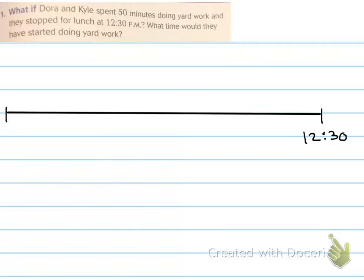So let's try another one. Dora again. Oh my goodness. Okay. What if Dora and Kyle spent 50 minutes doing yard work and they stopped for lunch at 12:30 PM? Whoa. Slackers. What are they doing? What time would they have started doing yard work? Okay. So this question, they changed it up on us. 50 minutes doing yard work. And they stopped at 12:30 PM. But it's still asking that same, what time did they start? So it should be an earlier time.